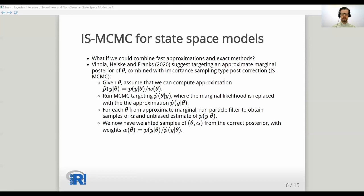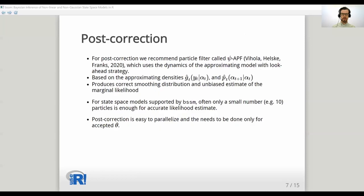For the post correction bssm uses by default a particle filter called CAPF, which again leverages the approximate model computed earlier, leading to a particle filter which in many cases needs only a few particles, making it computationally efficient. Note that the post correction needs only be done for each accepted theta independently, so it is trivial to parallelize this efficiently.